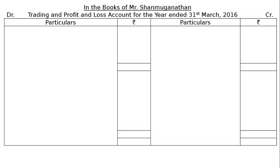The question gives the trial balance of Mr. Sanmuganathan on 31st March 2016. We are required to prepare the Trading and Profit and Loss Account for the year ending 31st March 2016 and a Balance Sheet as at that date, taking into account the following adjustments. We will now work through the books of Mr. Sanmuganathan.